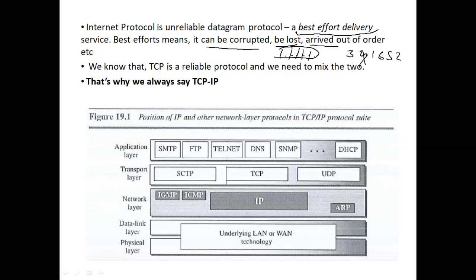IP is also a connectionless protocol, just like UDP. That is why when you need a safety net, you combine TCP — a reliable protocol — with IP, so that every packet is received, not corrupted, received in order or rearranged correctly. The IP protocol makes sure data gets from one end to the other, which is why you hear the combination TCP/IP most of the time. Using UDP with IP doesn't add value since UDP is itself unreliable, so TCP is the best combination partner for IP.